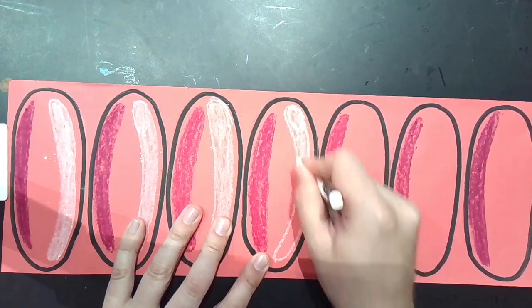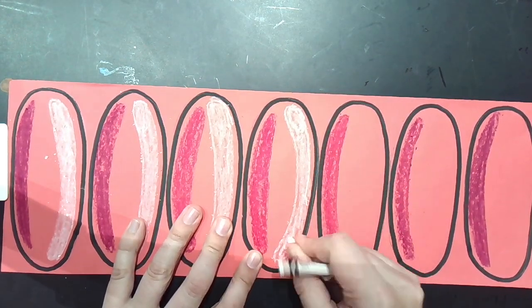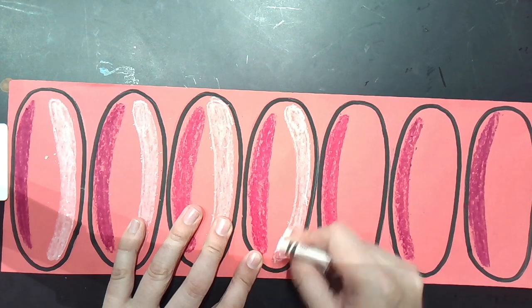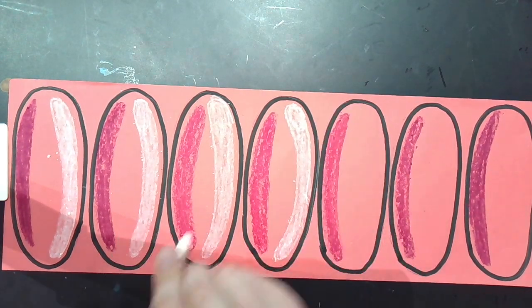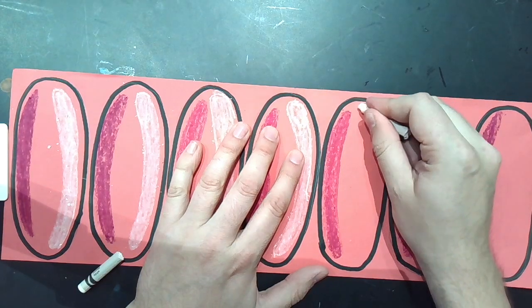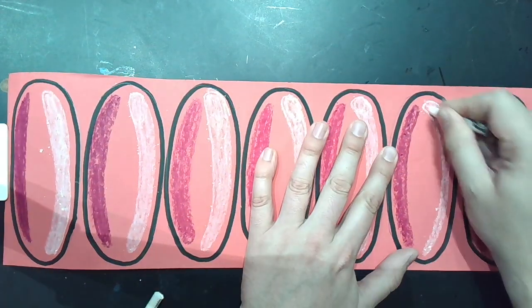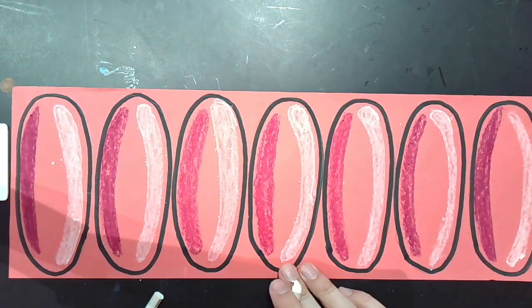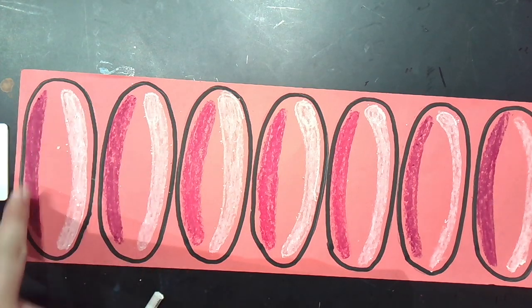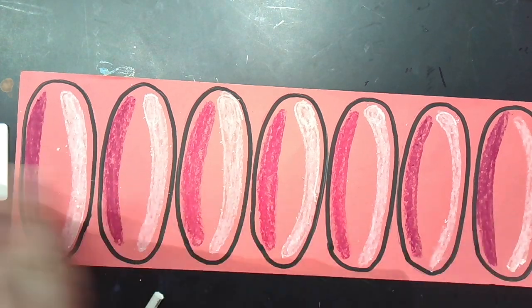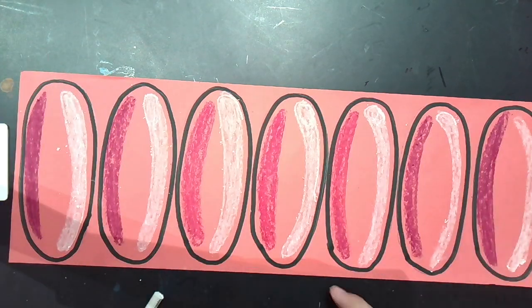My crayon broke here, but that's okay. Broken crayon still works. I was just pressing too hard. And there we go. Seven ovals with seven spots of dark color on one side and seven spots of white on the other.